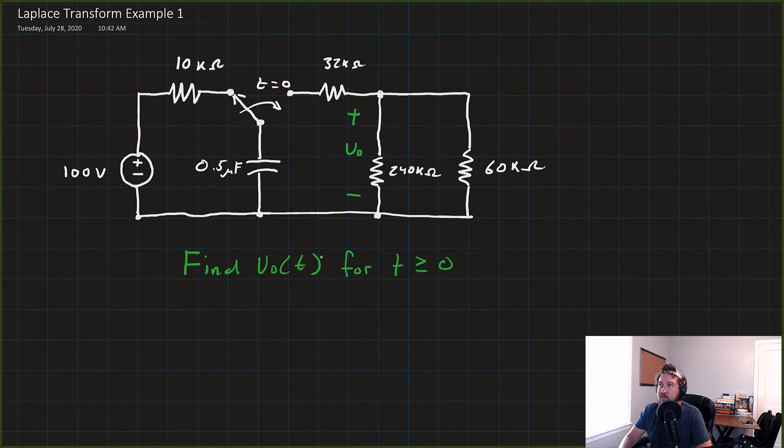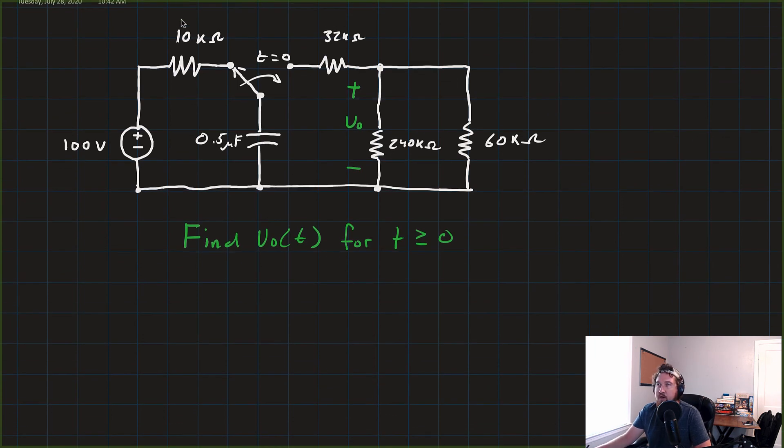We're going to solve this using the Laplace transform method. So actually, the first thing that I want to do is go ahead and draw out our post-switching circuit, the circuit after T equals zero. We start by just having that capacitor, which is at 0.5 microfarads, and it's connected in series to this 32-kilohm resistor.